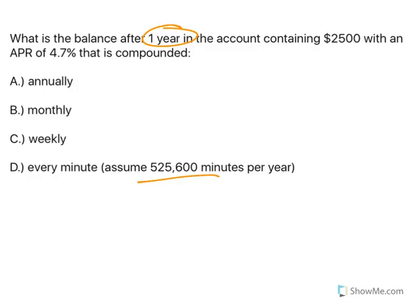So we're going to do this formula four times, every time just changing N. So recall that for annually, we're just compounding once a year. Monthly, we're compounding 12 times a year. Weekly, there are 52 weeks in a year.